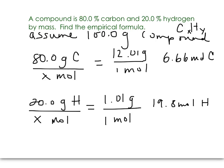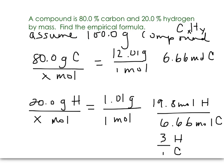These can't be our subscripts — they're not whole numbers. So this is where the mole ratio comes in. We're going to take the larger number of moles and divide it by the smaller number of moles; that's usually a good strategy. When you divide this out, it should be pretty close to a whole number. We end up with a 3 to 1 ratio — three hydrogens for every one carbon. So our empirical formula is CH3.